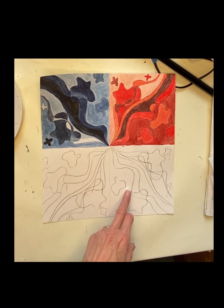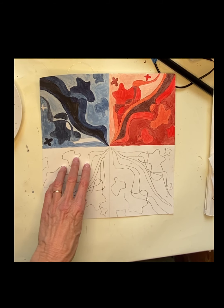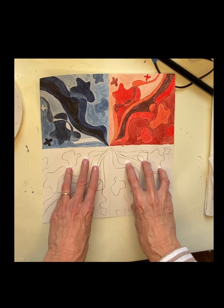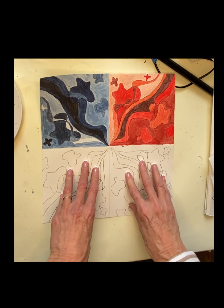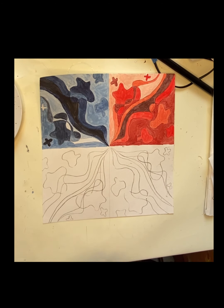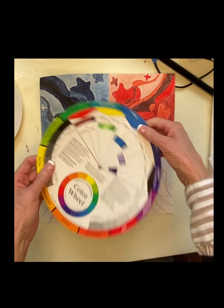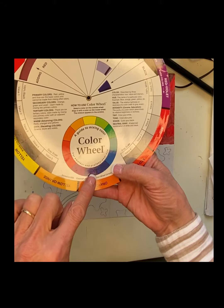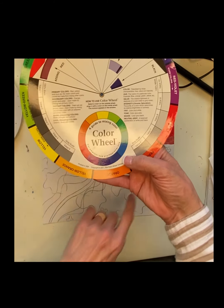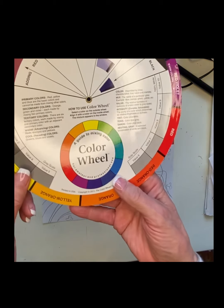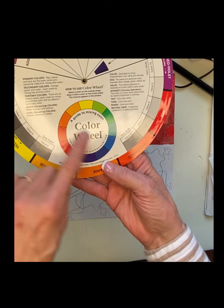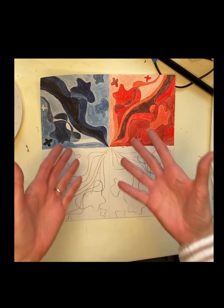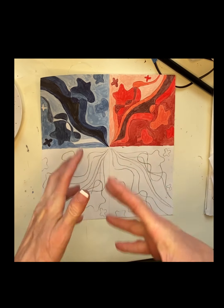Now I'm going to do the two complementary color schemes. Over here I'm going to do orange and blue because they're complementary. And then over here I'm going to do purple and yellow because they're complementary. Remember, complementary colors sit opposite each other on the color wheel. When I look at the color wheel, I can see yellow and purple or violet are right across from each other. Just like with monochromatic and analogous, you can add tints and shades to these colors, so you have a bunch of colors you can use.